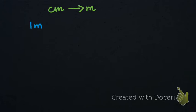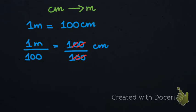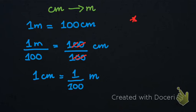We all know that one meter equals 100 centimeters. So we are going to divide both sides by 100. This gives us: one centimeter equals one upon 100 meters. So when converting centimeters to meters, we are going to divide by 100 — whereas when converting meters to centimeters we were multiplying by 100.